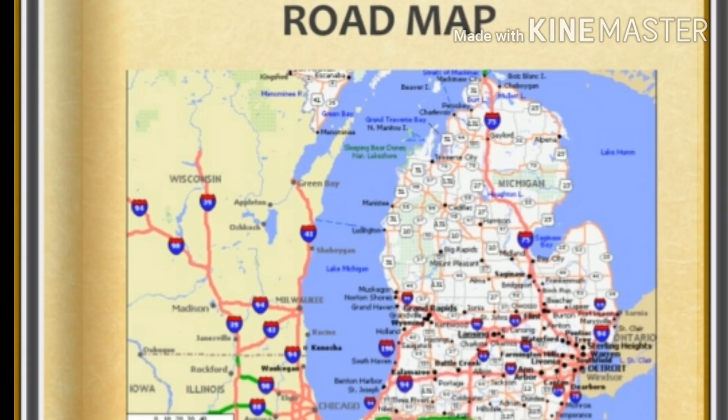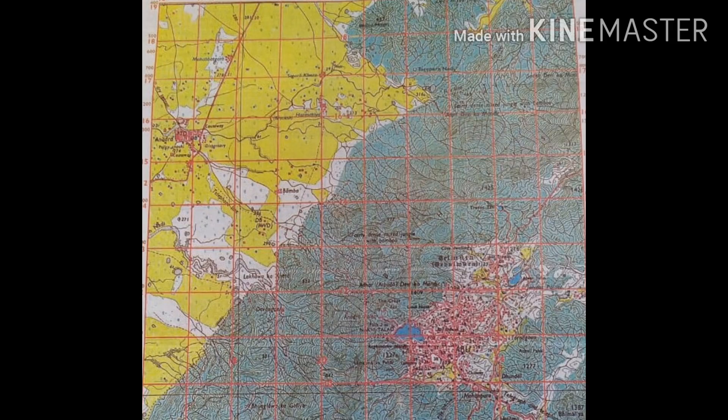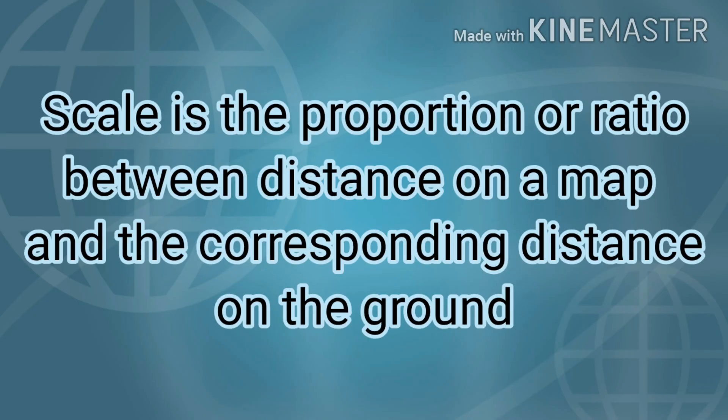Distance is an important component of a map. A map represents a portion of the earth's surface on a reduced size or a scale. So what is meant by the scale of a map? It is the proportion or ratio between the distance on a map and the corresponding distance on the ground.